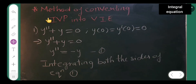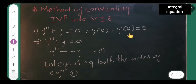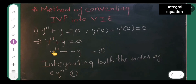Now I will be converting this initial value problem into a Volterra integral equation. The problem is y'' + y = 0, with y(0) = 0 and y'(0) = 0. From this equation, y'' = -y, taking y to the other side. Call this equation 1.